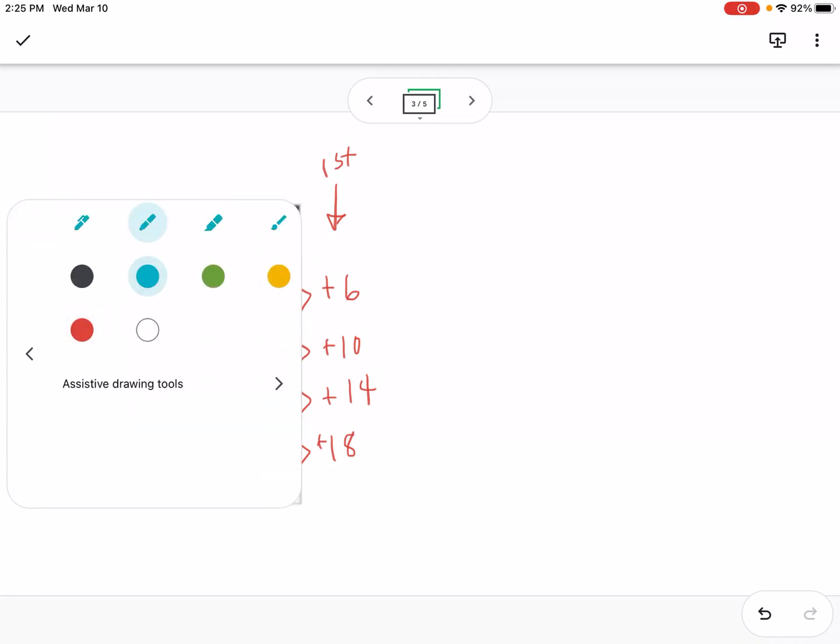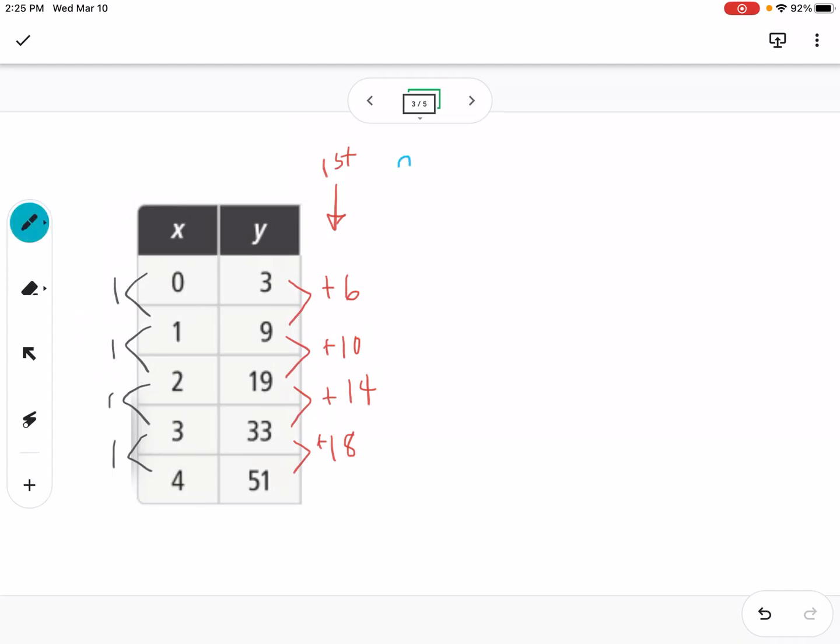So now let's look for the second differences. So the second differences, I'm going to take the difference between the first differences. So from 6 to 10, that's going up 4. From 10 to 14, that's going up 4, and from 14 to 18, that's going up 4. So you can see that the second differences are constant. So what that means is that this is a quadratic function.